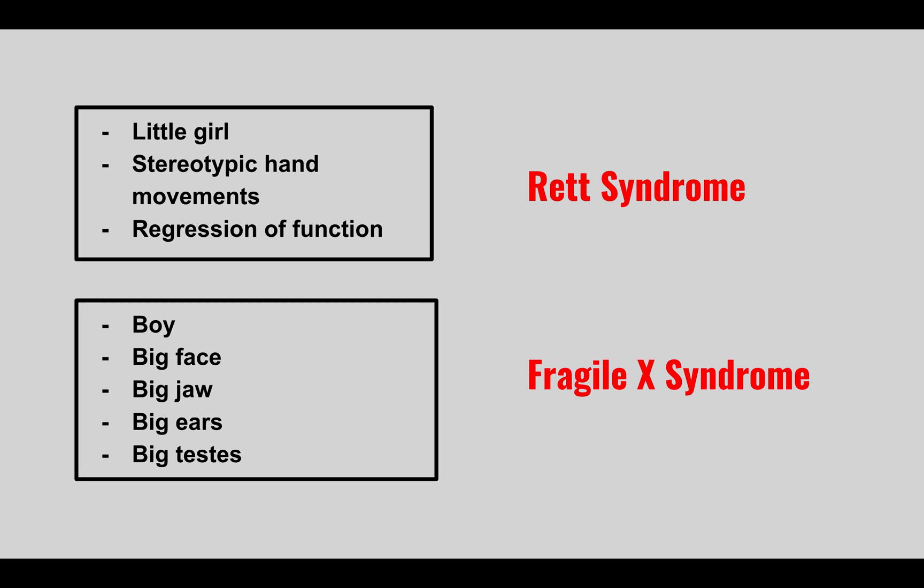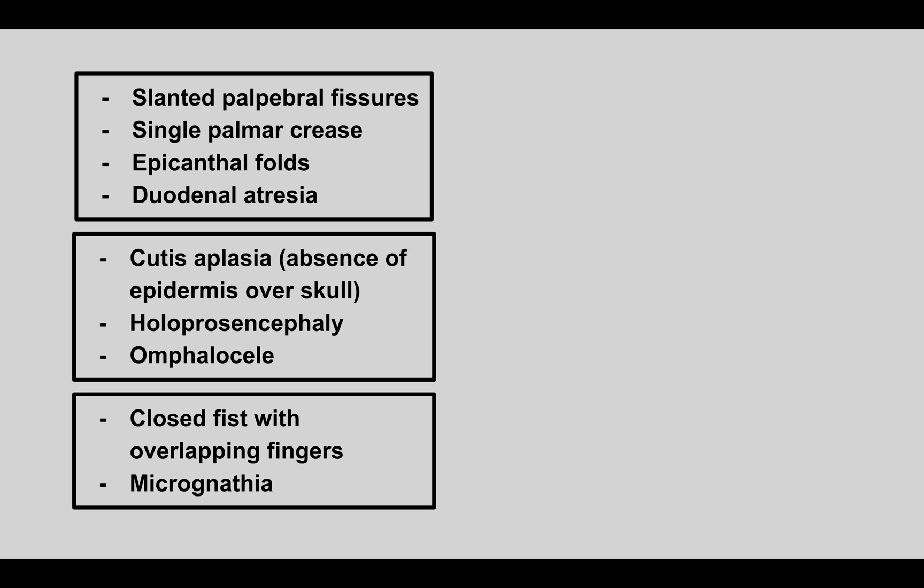The next condition: slanted palpebral fissures, single palmar crease, epicanthal folds, and duodenal atresia. This is Down syndrome — trisomy 21, a very high-yield condition. Duodenal atresia presents with the double bubble sign on imaging. These patients also have an increased risk of Alzheimer's disease due to the APP gene on chromosome 21.